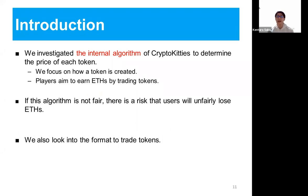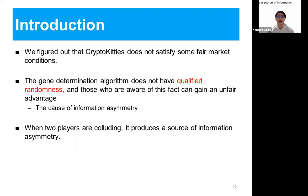Specifically, we investigate the internal algorithm of CryptoKitties to determine the potential price of each token. We focus on how a token is created. Players aim to earn ethers by trading tokens. If this algorithm is not fair, there is a risk that users will unfairly lose ethers. We also look into the format and environment to trade tokens. As a result, we found that CryptoKitties does not satisfy some fair market conditions. The gene determination algorithm does not have qualified randomness, and those who are aware of this fact can gain an unfair advantage. We figure out that they are the cause of information asymmetry. In addition, when two players are colluding, other players lose opportunities to gain ethers.